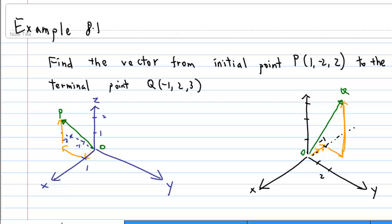In this example, I'm going to show you how to write down a three-dimensional vector given the initial point P and the terminal point Q.